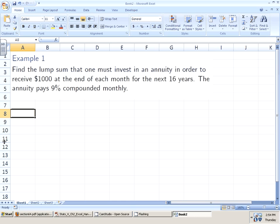Find the lump sum that one must invest in an annuity in order to receive $1,000 at the end of each month for the next 16 years. The annuity pays 9% compounded monthly.